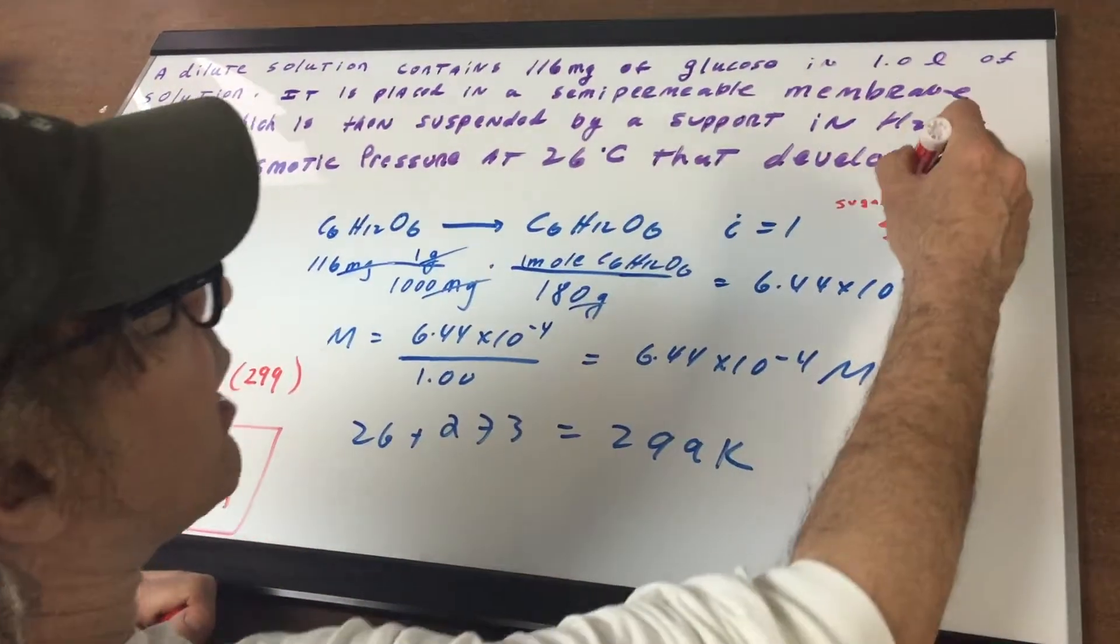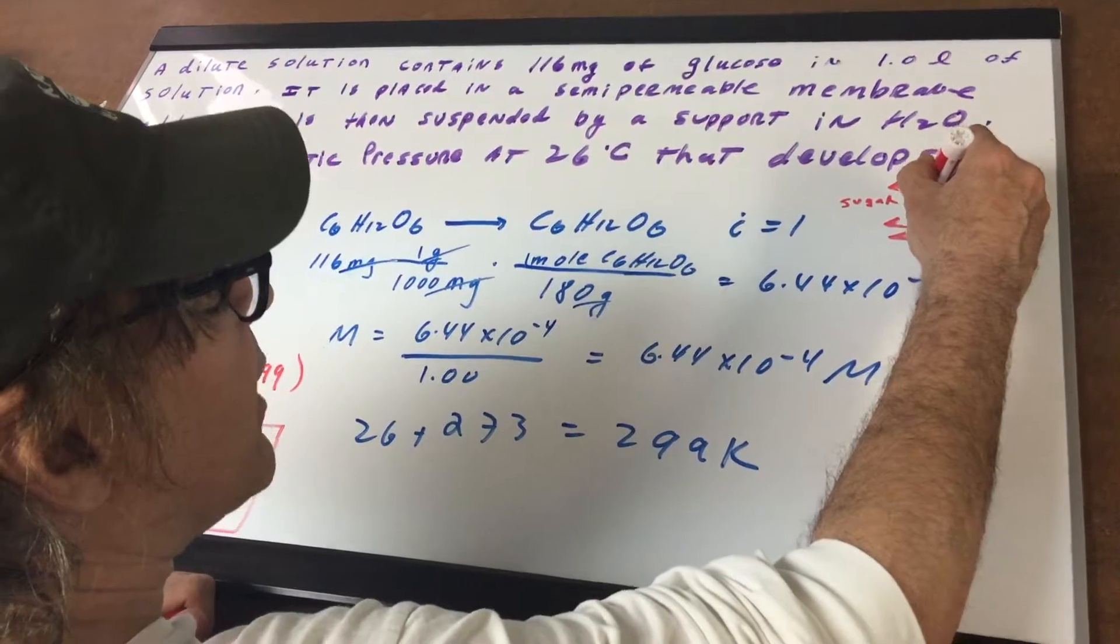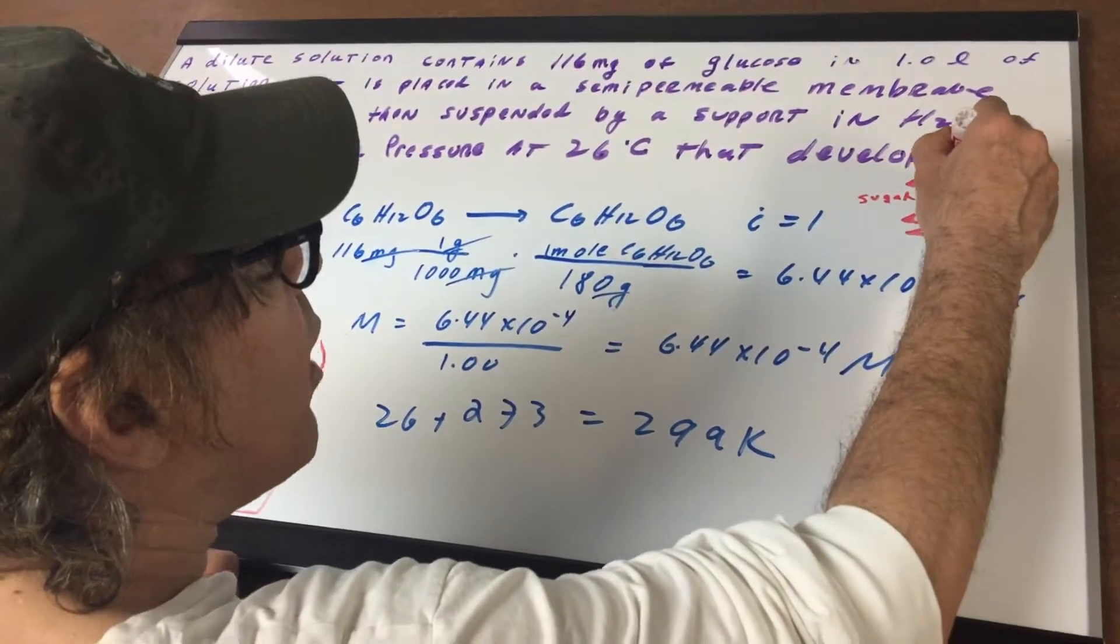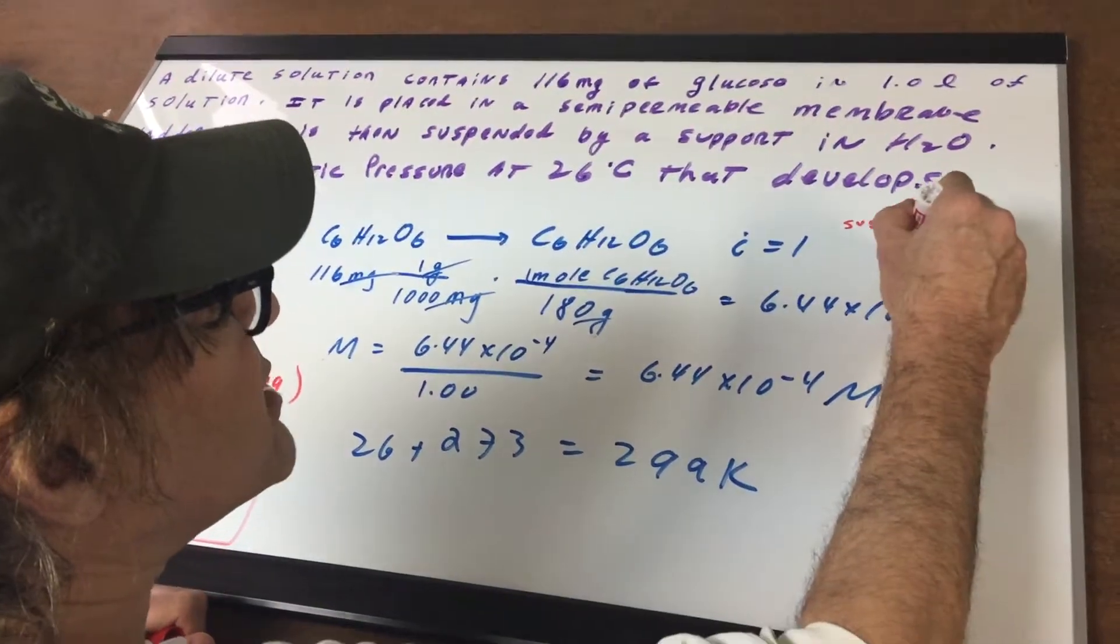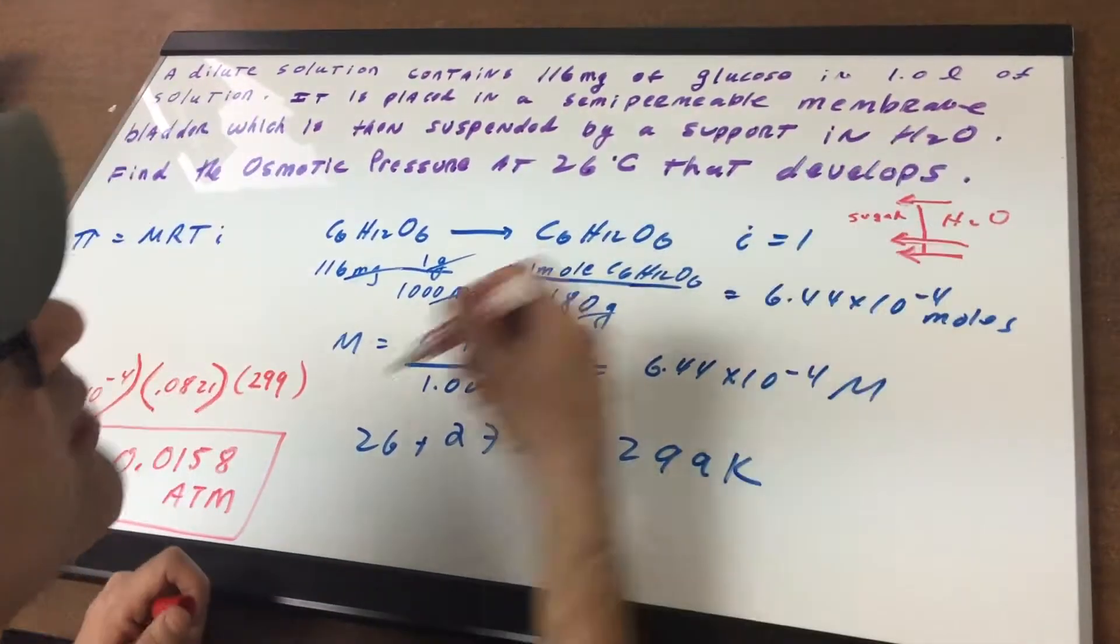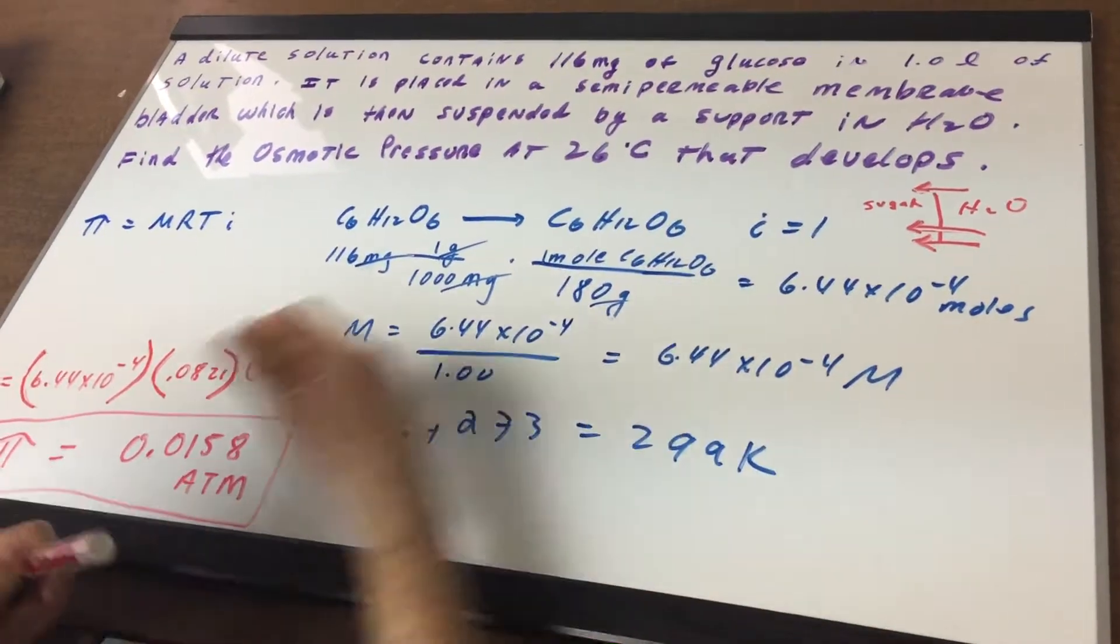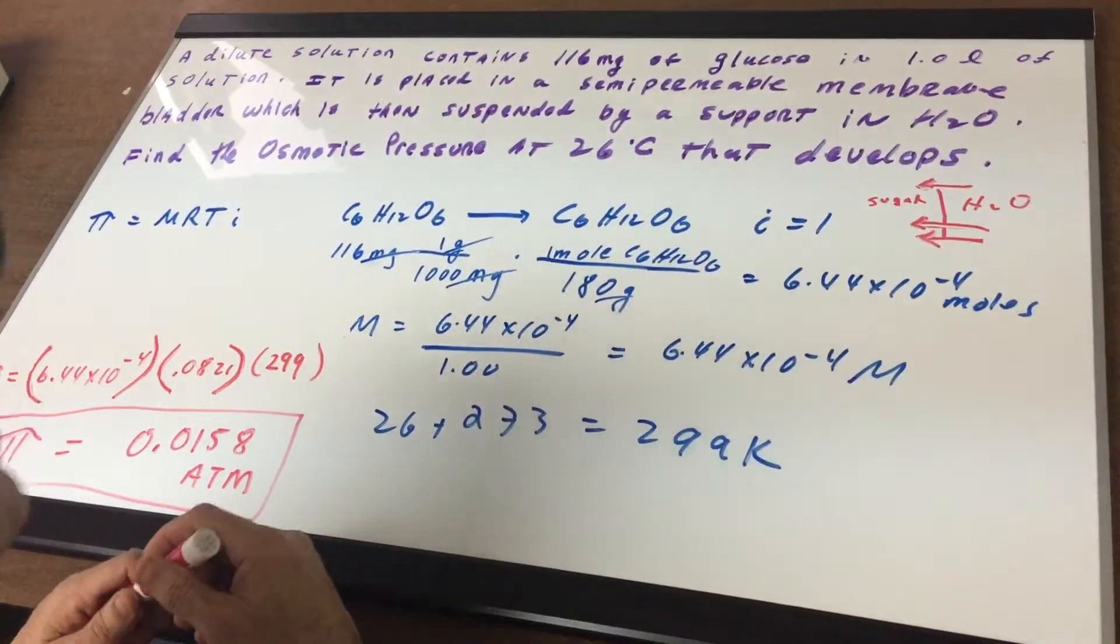As you can see here, we have a semi-permeable membrane and the flow always goes from the dilute side, which is the water side, the solvent side, and it dilutes out to the sugar. So the flow would be from right to left in this case.